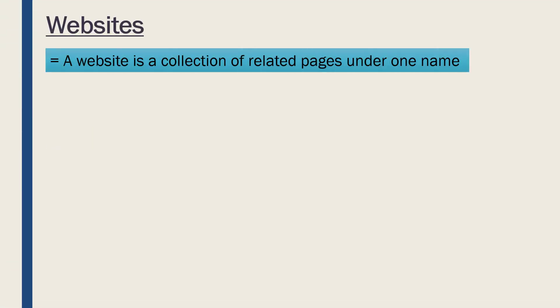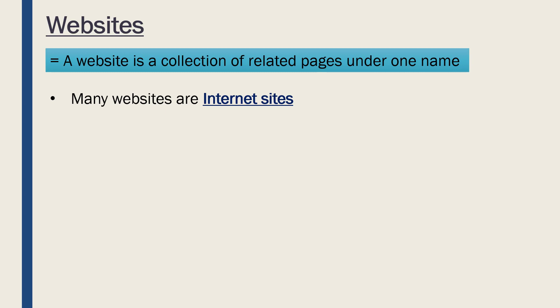Firstly, a website is a collection of related pages which are stored under one name. I define this because people associate websites with the internet, since many websites are internet sites. Some people might think that every website is an internet site, but actually there are some websites which are not hosted on the internet, though many websites are.